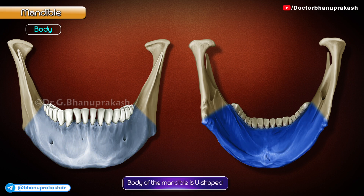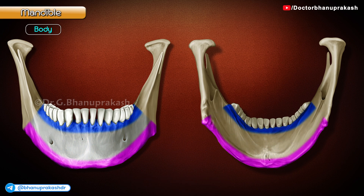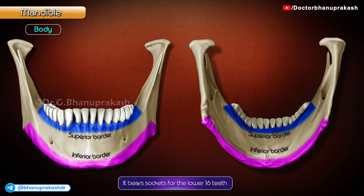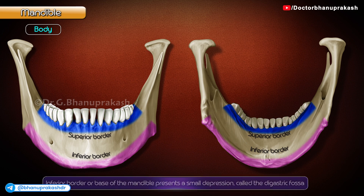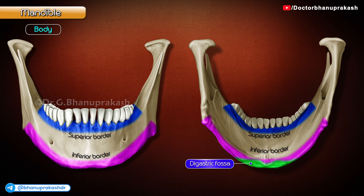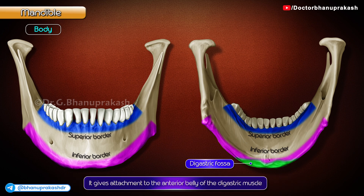Body. The body of the mandible is U-shaped and presents two borders: a superior and an inferior. The superior border of the body is called the alveolar process and bears sockets for the lower 16 teeth. The inferior border or base of the mandible presents a small depression called the digastric fossa on either side near the median plane, giving attachment to the anterior belly of the digastric muscle.